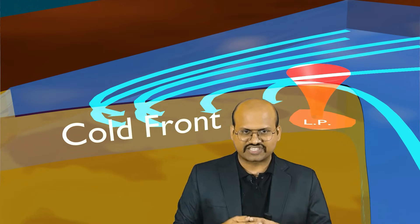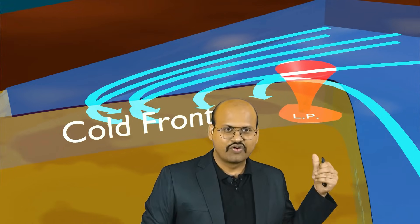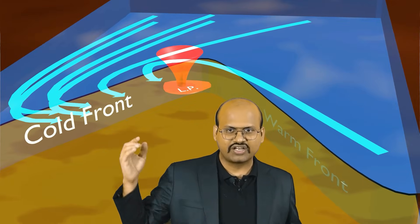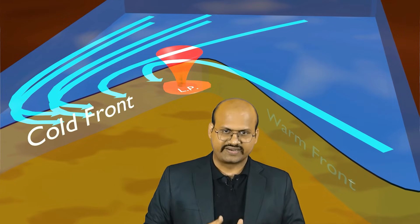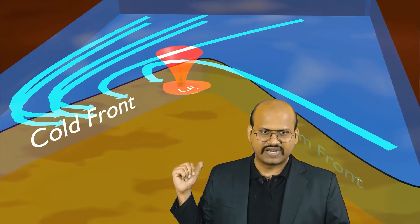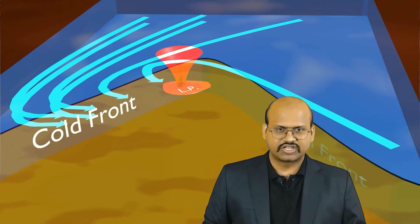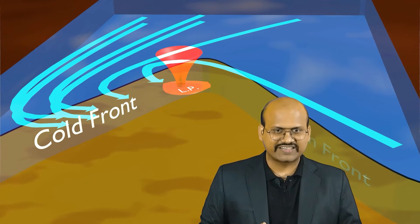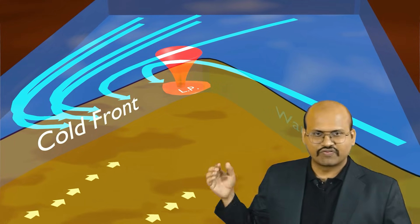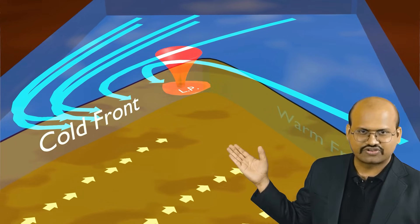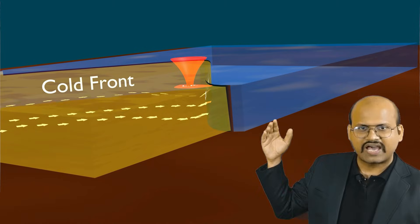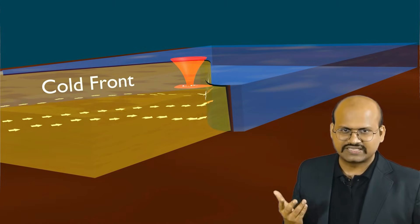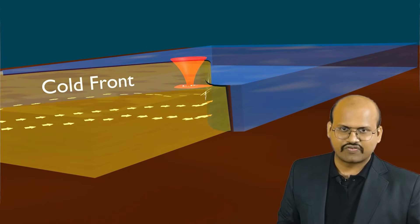So we can see that in our extratropical cyclone we have a warm front on this side and a cold front on this side, with the warm air in the middle. Just as happens at a warm front, the warm air tries to move the cold air.